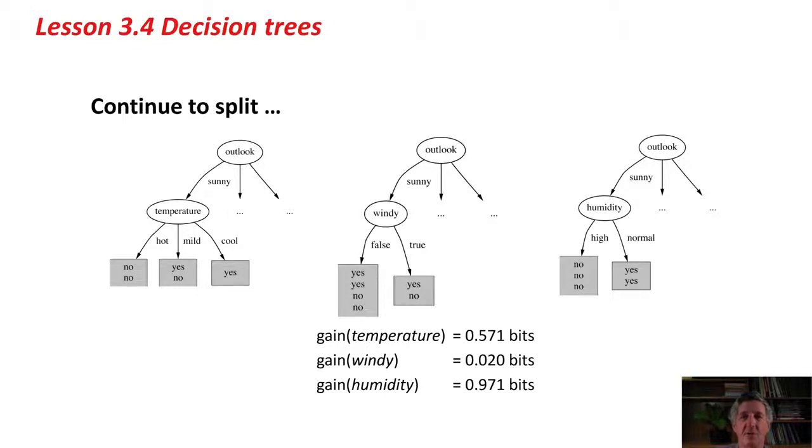At the first branch, we might split on temperature, or windy, or humidity. We're not going to split on outlook again, because we know that outlook is sunny. By all instances that reach this place, the outlook is sunny. For the other three things, we do exactly the same thing. We evaluate the information gain for temperature at that point, for windy and humidity, and we choose the best.